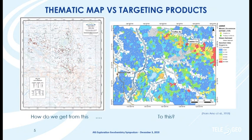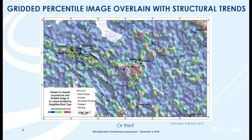Basically, we want to go from a typical dot thematic map on the left-hand side of the screen to a catchment targeting map on the other side. Another way to represent the data is to use a percentile gridded map — stepping back and taking a broad view. This example is from southern British Columbia from a project I did with IO Global in 2011. We leveled the copper data using a simplified lithology and superimposed structural trends, and you can start to see structural controls on the anomalies. Highland Copper sits right in that big anomaly.